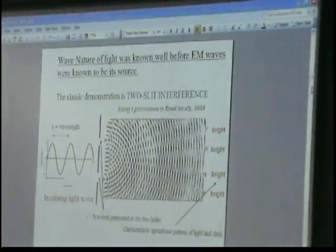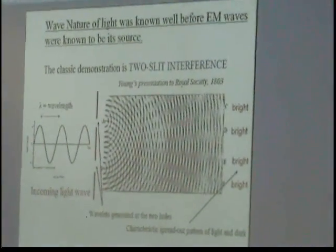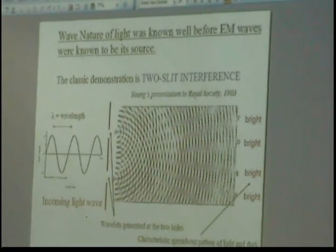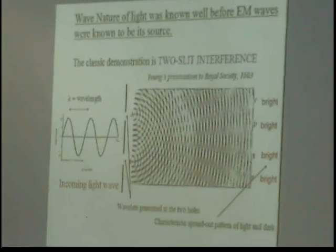The wave nature of light was very well known. It was known before any of the invention of radio or any of the electromagnetic waves. It was known in the 1820s. It was a guy named Young who figured it out.